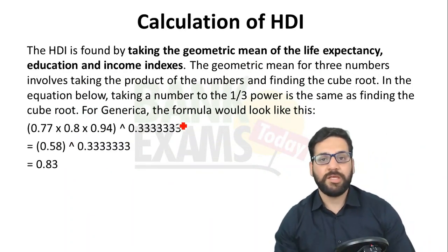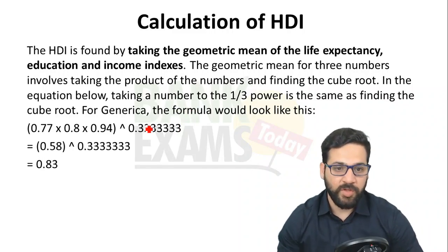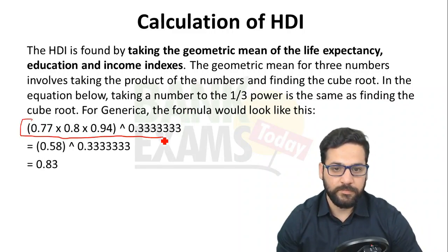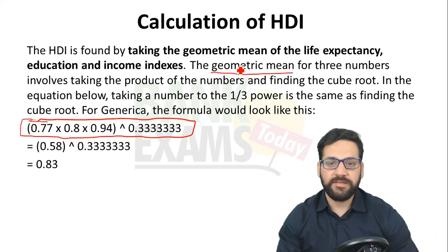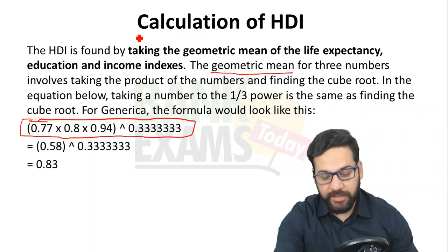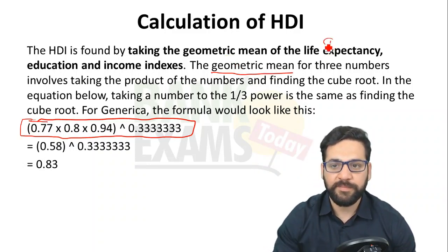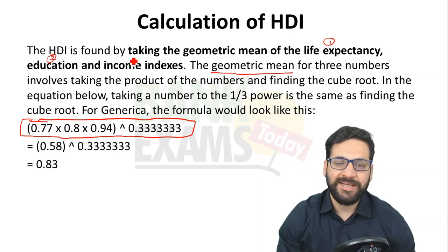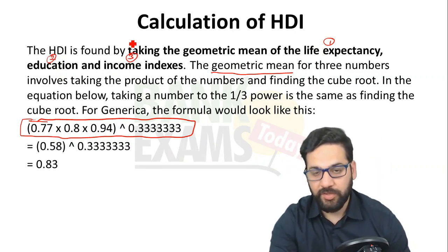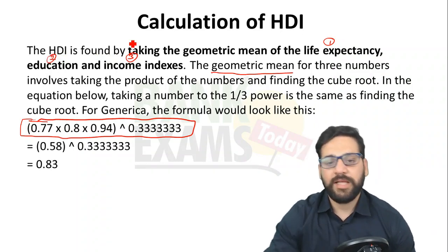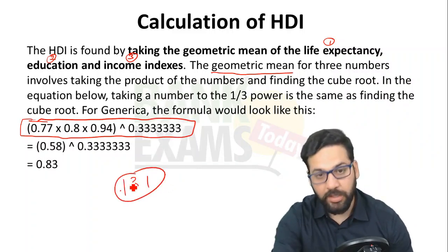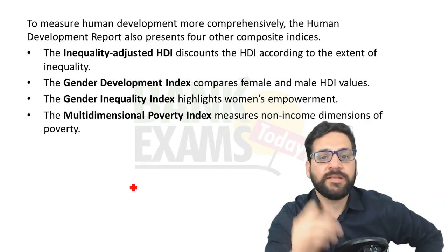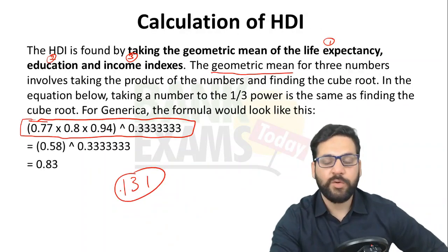Now, calculating the HDI: the Human Development Index is the geometric mean of the three indices — life expectancy index, education index, and income (GNI) index. That's how the HDI is calculated. India's rank in 2016 was 131.